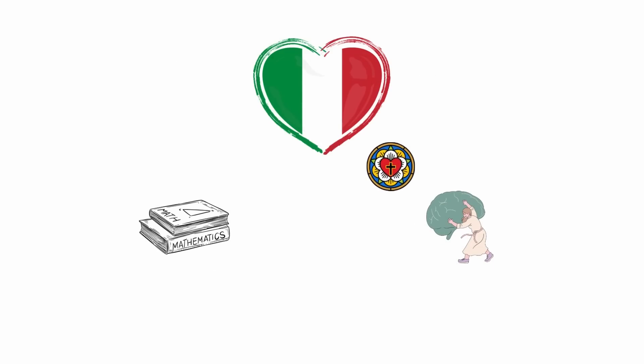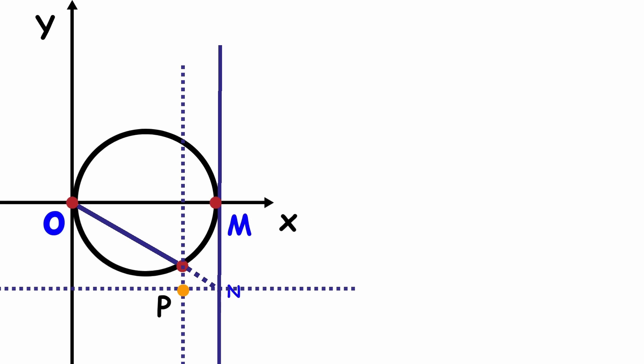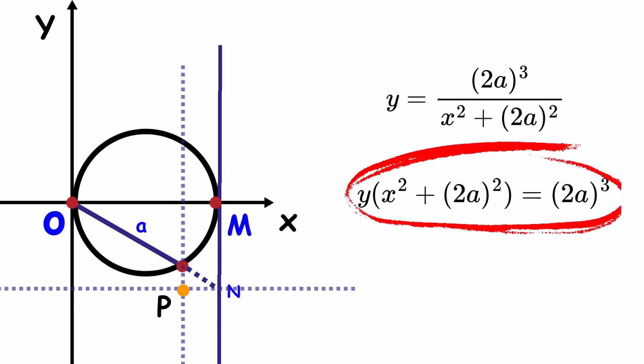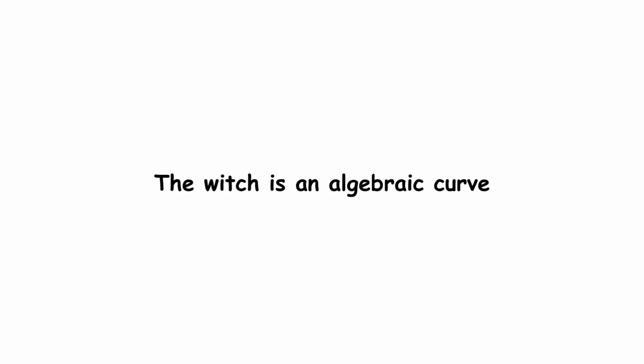It is named after Italian mathematician, philosopher, theologian, and humanitarian Maria Gaetana Agnesi. If we call the radius of our circle A, then we can write this equation for the Witch. Which can be rewritten as this. As this is equivalent to a polynomial equation, the Witch is an algebraic curve.